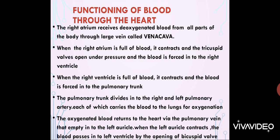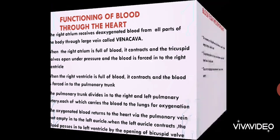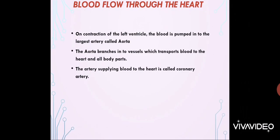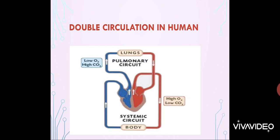The oxygenated blood returns to the heart via the pulmonary vein, emptying into the left auricle. When the left auricle contracts, the blood passes into the left ventricle through the bicuspid valve. On contraction of the left ventricle, blood is pumped into the largest artery, the aorta, which branches into vessels transporting blood to the heart and all body parts. There are two types of circulation in human beings: pulmonary circulation and systemic circulation. You can draw this diagram and prepare detailed notes.